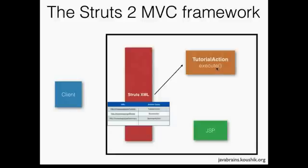Here I have a tutorial action whose intended goal is to pull up a list of tutorials available on the internet. Let's say you have a business service method that gives the list, or the execute method itself does all the hard work and ends up with a list of tutorials. Now it has to pass the control to a JSP that actually renders those tutorials in HTML format. An execute method could pass the control to the JSP.